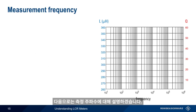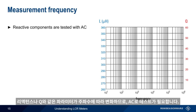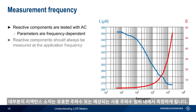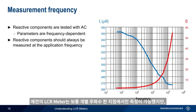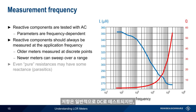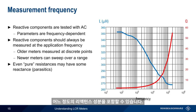Next, let's talk about measurement frequency. Reactive components such as capacitors and inductors are tested with alternating current, because their parameters — such as reactance and Q — are frequency dependent. In most cases, reactive components should be measured at the frequency of intended application, or across the expected application frequency range. Older LCR meters often only measured at discrete frequency points, but newer meters are able to measure by sweeping across the defined frequency range. Note that even pure resistances may contain some reactance when tested using AC at different frequencies.